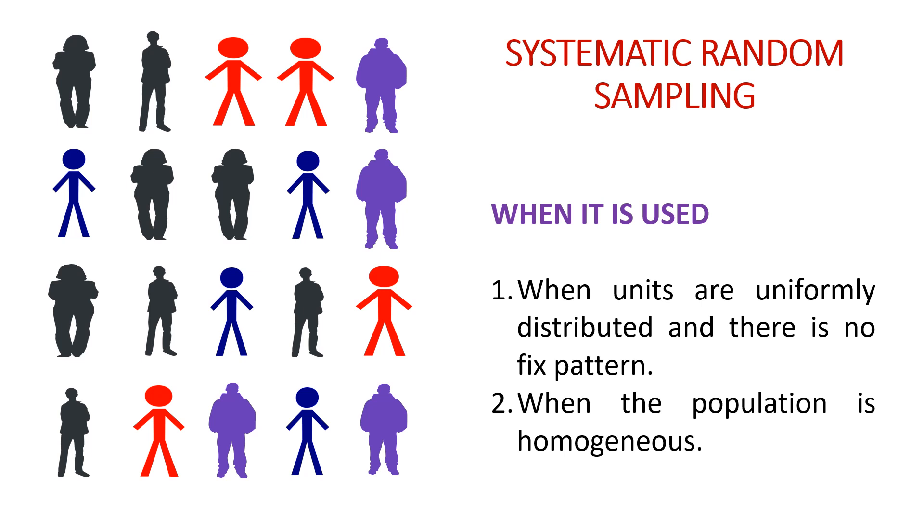Systematic Random Sampling is used when units or individuals are uniformly distributed and there is no fixed pattern in the population. Also, the population needs to be homogeneous for Systematic Random Sampling. If the population is heterogeneous, if the characteristics of the individuals in the population vary too much, then we cannot use Systematic Random Sampling.